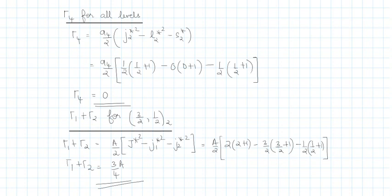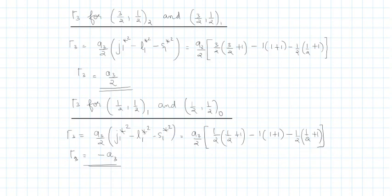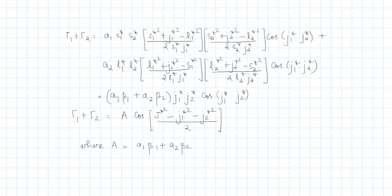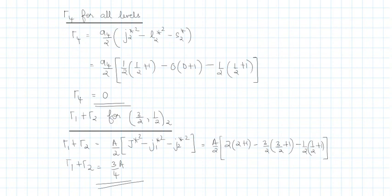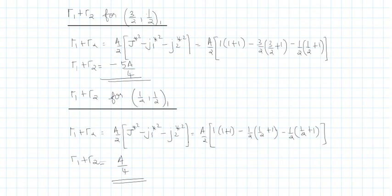Gamma1 plus gamma2 will be different for all four levels because it depends on capital J as well as j1 and j2. For (3/2,1/2) with J=2, gamma1+gamma2 = 3A/4. For (3/2,1/2) with J=1, gamma1+gamma2 = −5A/4. For (1/2,1/2) with J=1, gamma1+gamma2 = A/4.